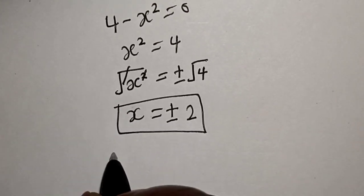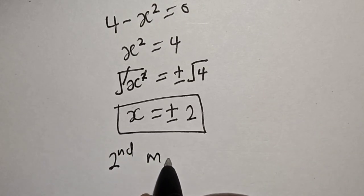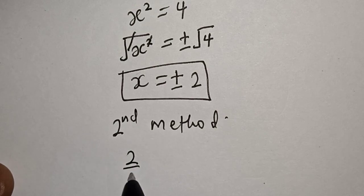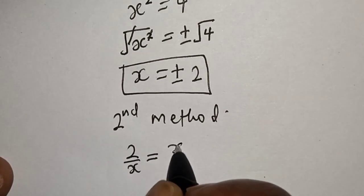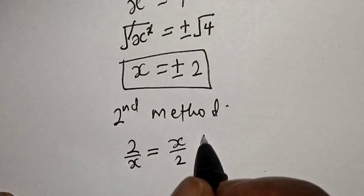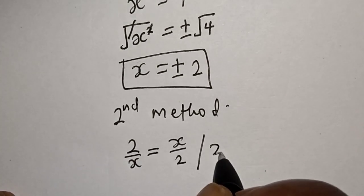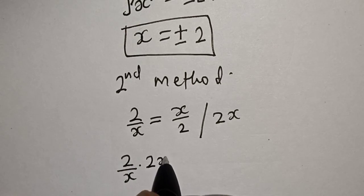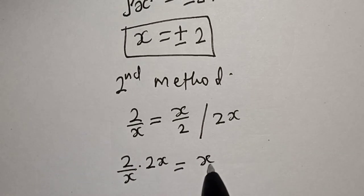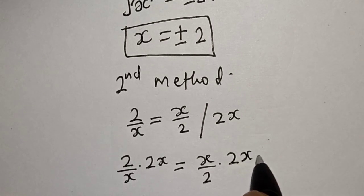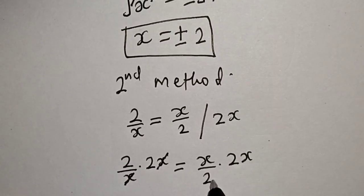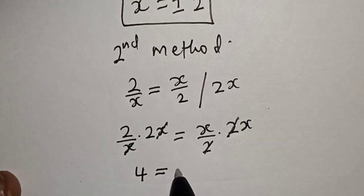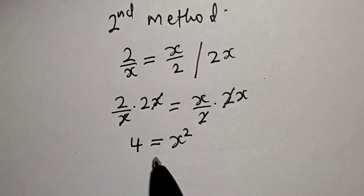For the second method, we have the given equation: 2 over x is equal to x over 2. Let's multiply both sides by 2x. On the left, 2 over x multiplied by 2x — the x's cancel. On the right, x over 2 multiplied by 2x — the 2's cancel. We have 2 times 2 equals 4, and x times x equals x squared.